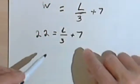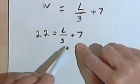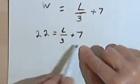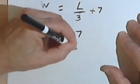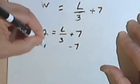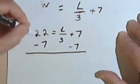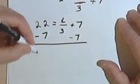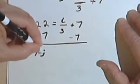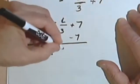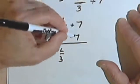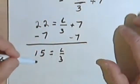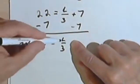The first thing I want to do usually in a problem like this is start with the addition or subtraction part, which means let's get rid of that 7. So I'll subtract 7 from both sides. 22 minus 7 is 15. On the right side I'm just going to have L over 3. The 7s will cancel because I have plus 7 and minus 7. So now I've got 15 equals L over 3.